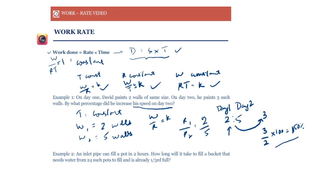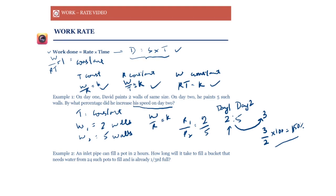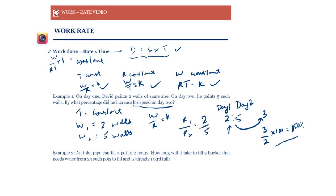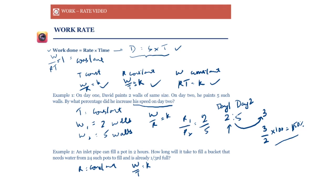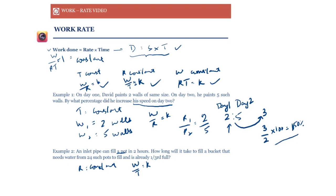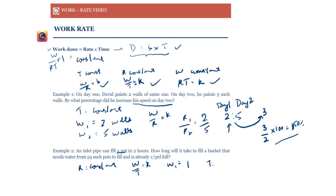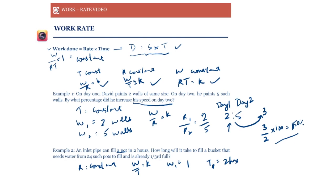Next example: an inlet pipe can fill a pot in two hours. How long will it take to fill a bucket that needs water from 24 such pots and is already one-third full? Here the rate of the inlet pipe is constant, so work done varies directly with time. We know it fills one pot in two hours.